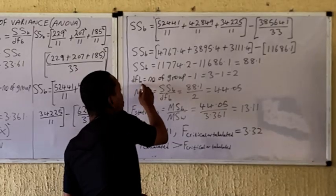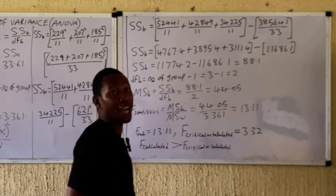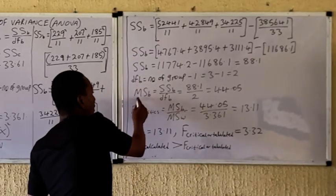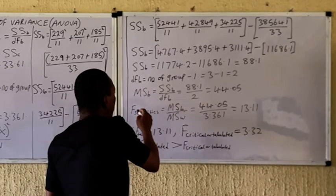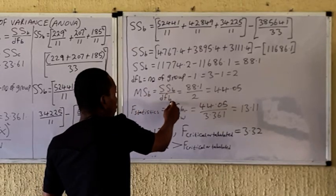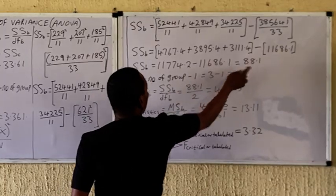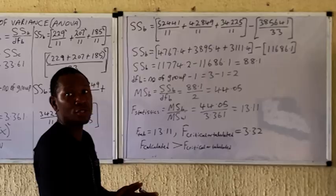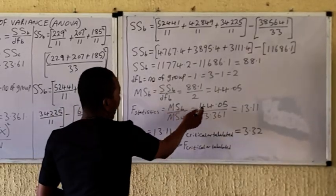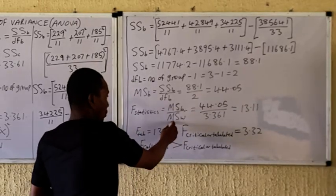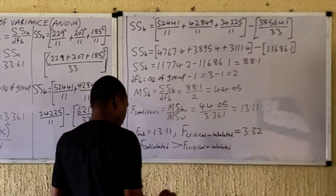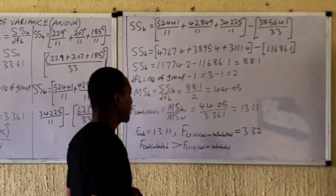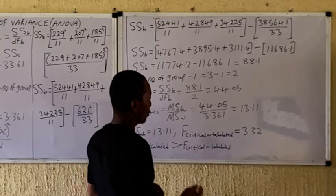The degrees of freedom between groups equals number of groups minus one: 3 minus 1 equals 2. Therefore, the Mean Square Between Groups equals 88.1 divided by 2, which equals 44.05. The Mean Square Within Groups was already calculated as 3.361. So the F-statistic equals 44.05 divided by 3.361, giving an F-calculated value of 13.11.